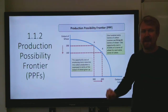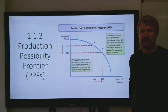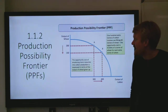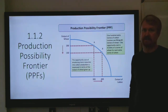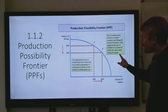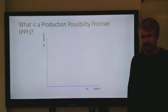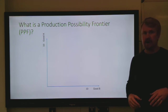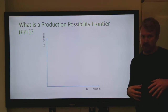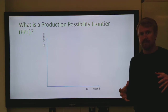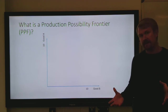Hi everybody. In this video we're going to be looking at production possibility frontiers. A production possibility frontier shows the total possible number of goods that an economy can produce.